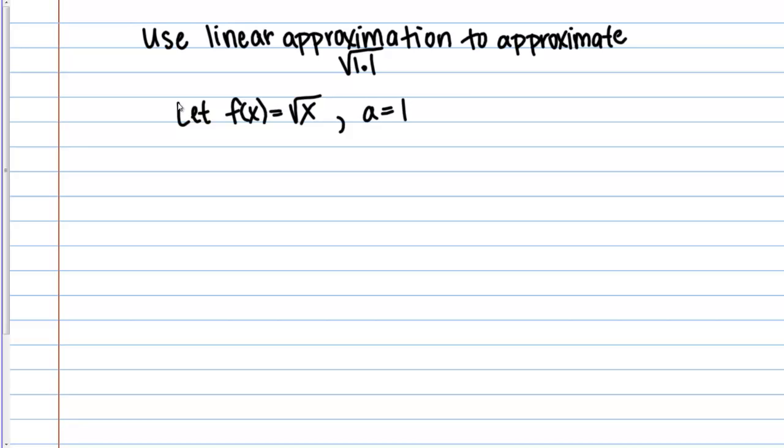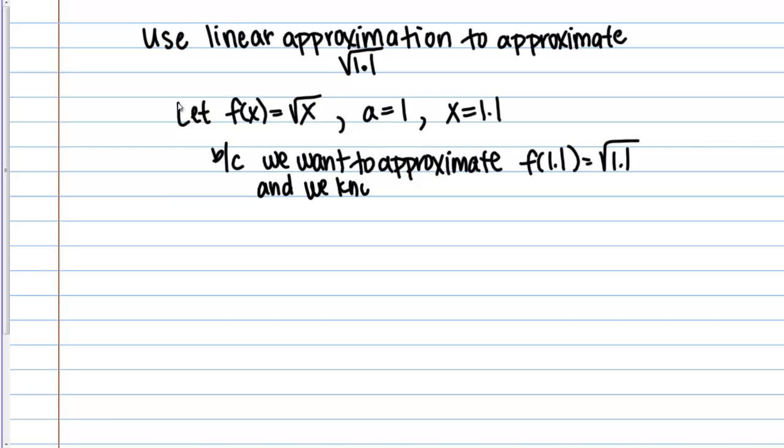We're going to let A equal 1. This will make more sense once we actually plug this into the formula. We're letting A equal 1 because 1 is a value we know about. We know what the square root of 1 is. Then we're also going to let X equal 1.1. X is 1.1 because that's what we're actually trying to find. We're trying to find the square root of 1.1. Just to sum that up, this is because we want to approximate F of 1.1 or the square root of 1.1. We know F of 1, which is the square root of 1. We know that equals 1.